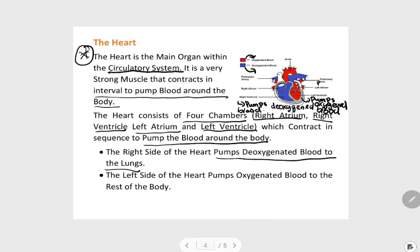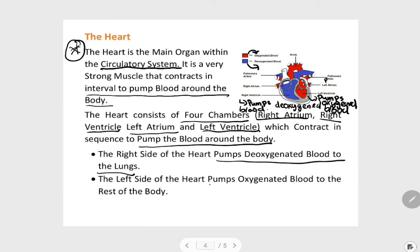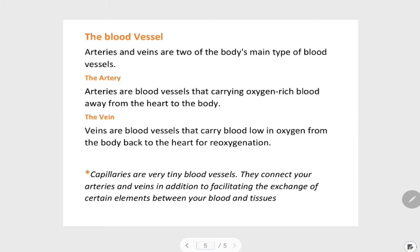To the rest of the body. Last slide: the blood vessels. Arteries and veins are two of the body's main types of blood vessels. Arteries are blood vessels that carry oxygen-rich blood away from the heart to the body.